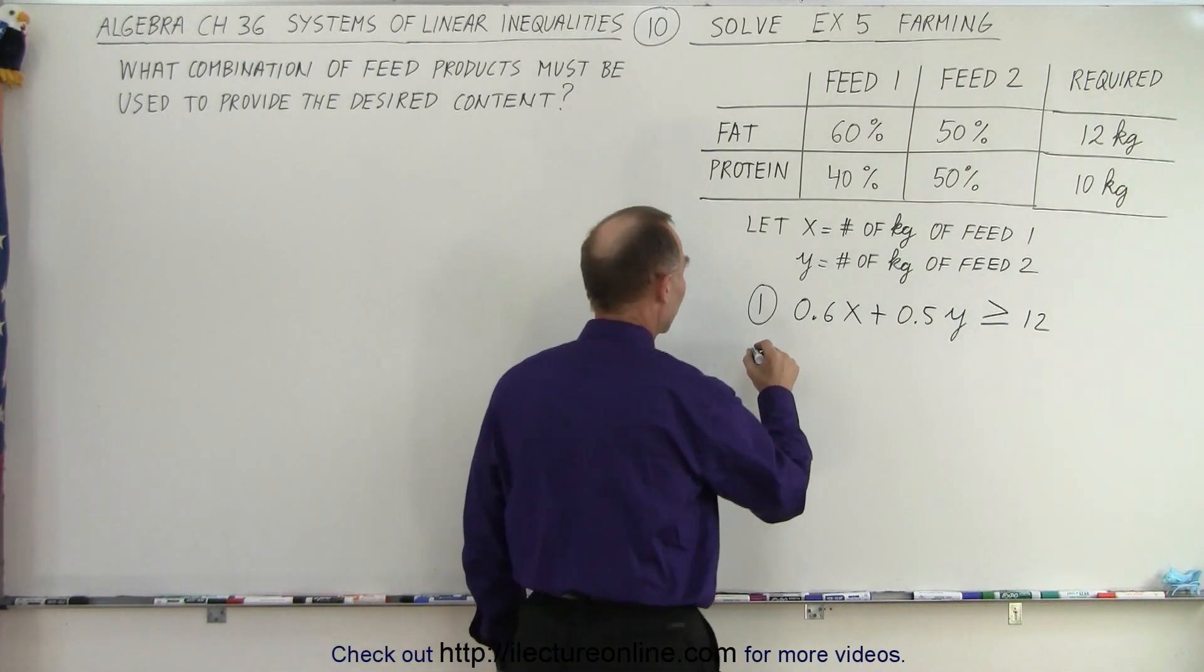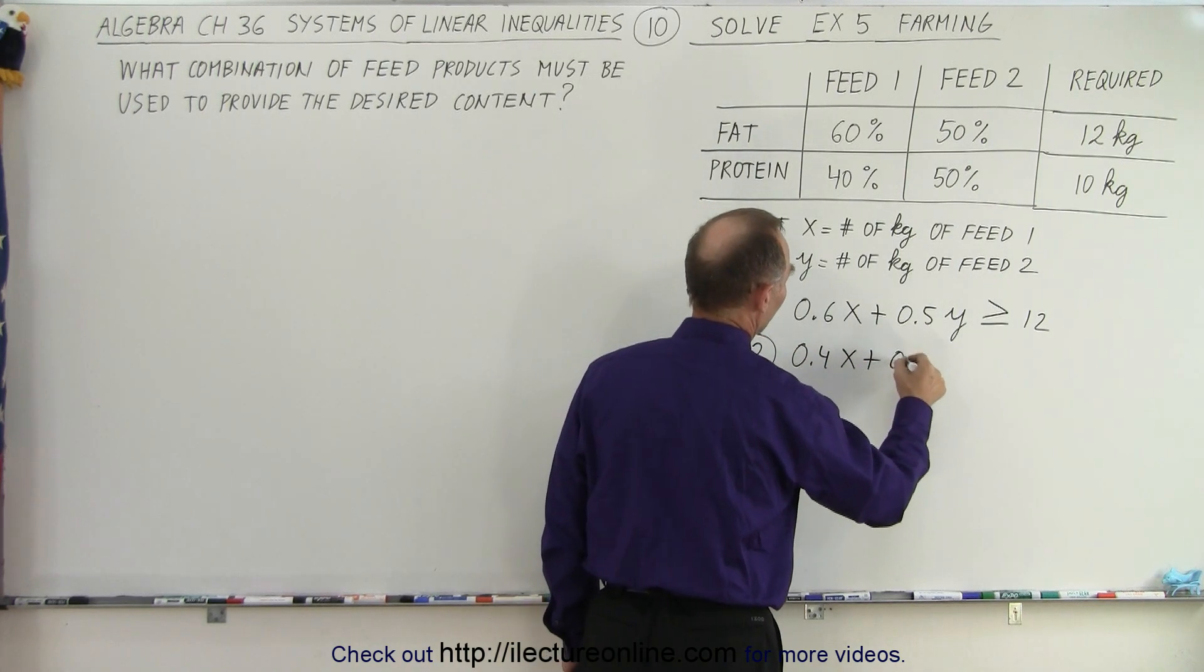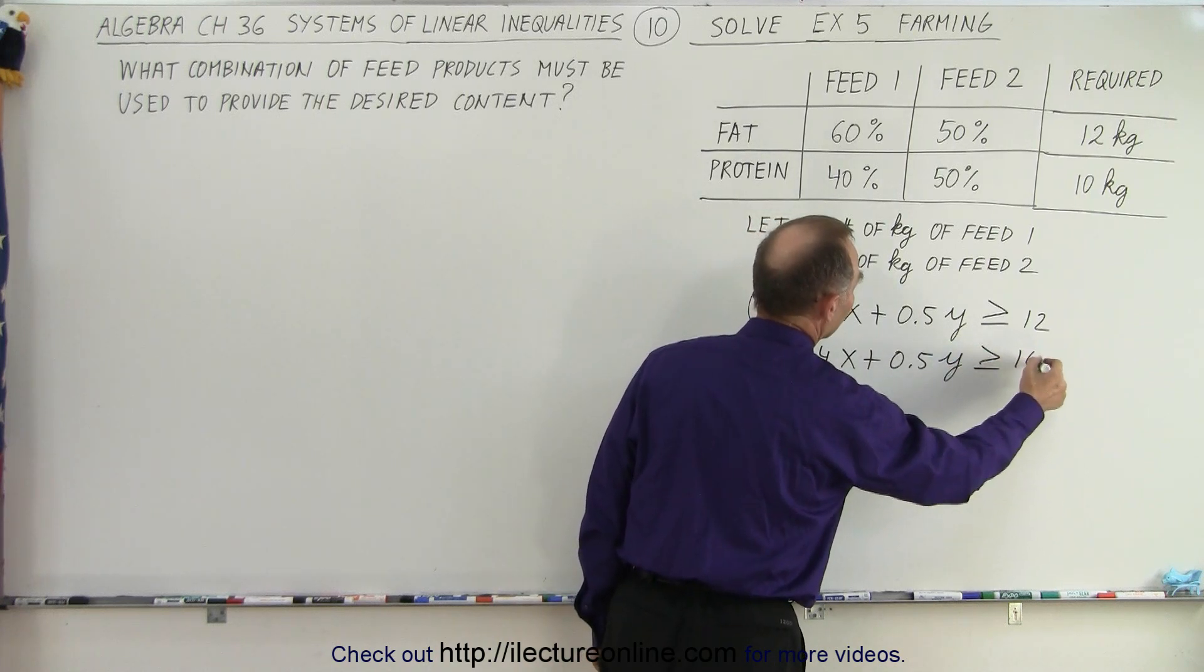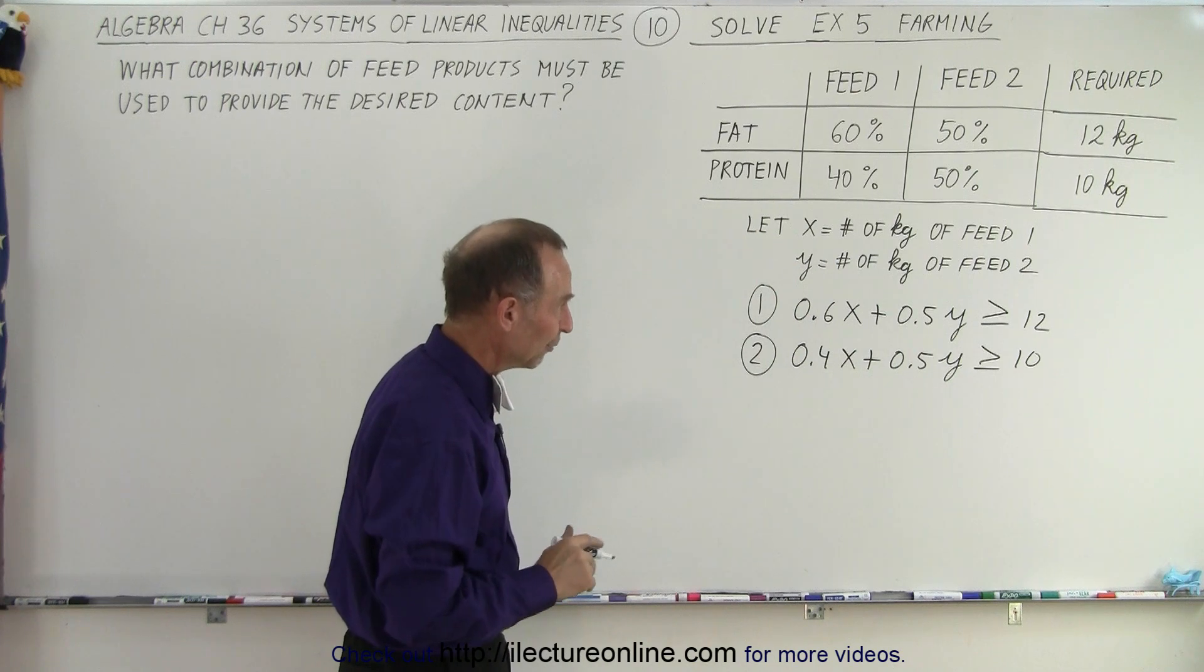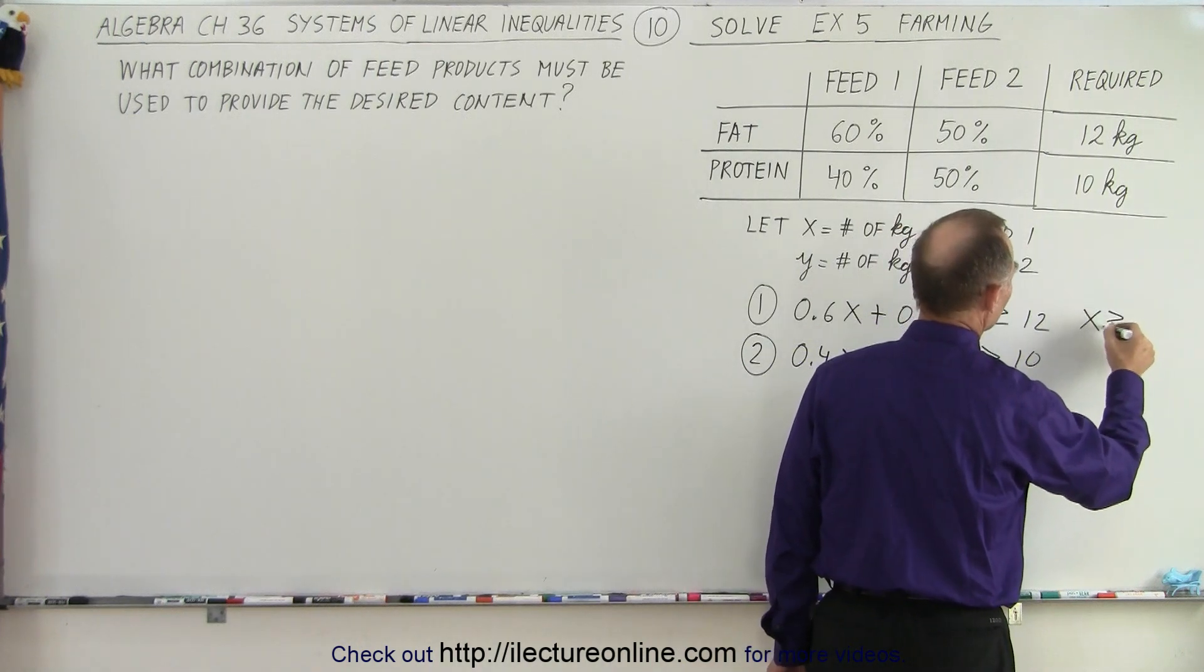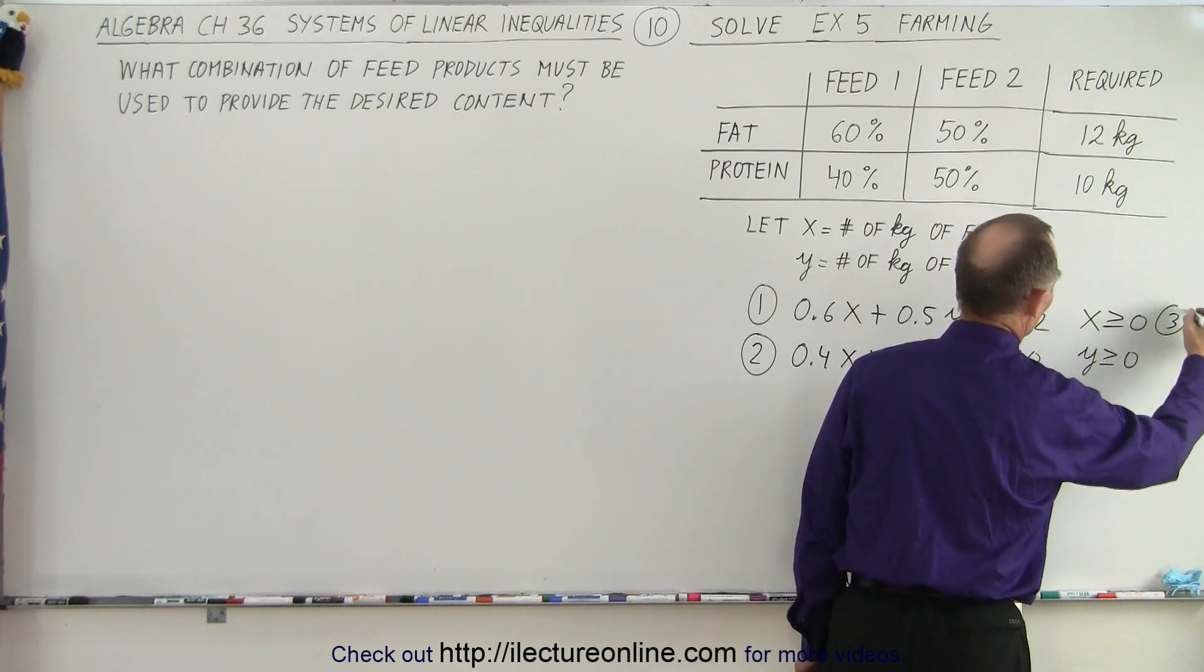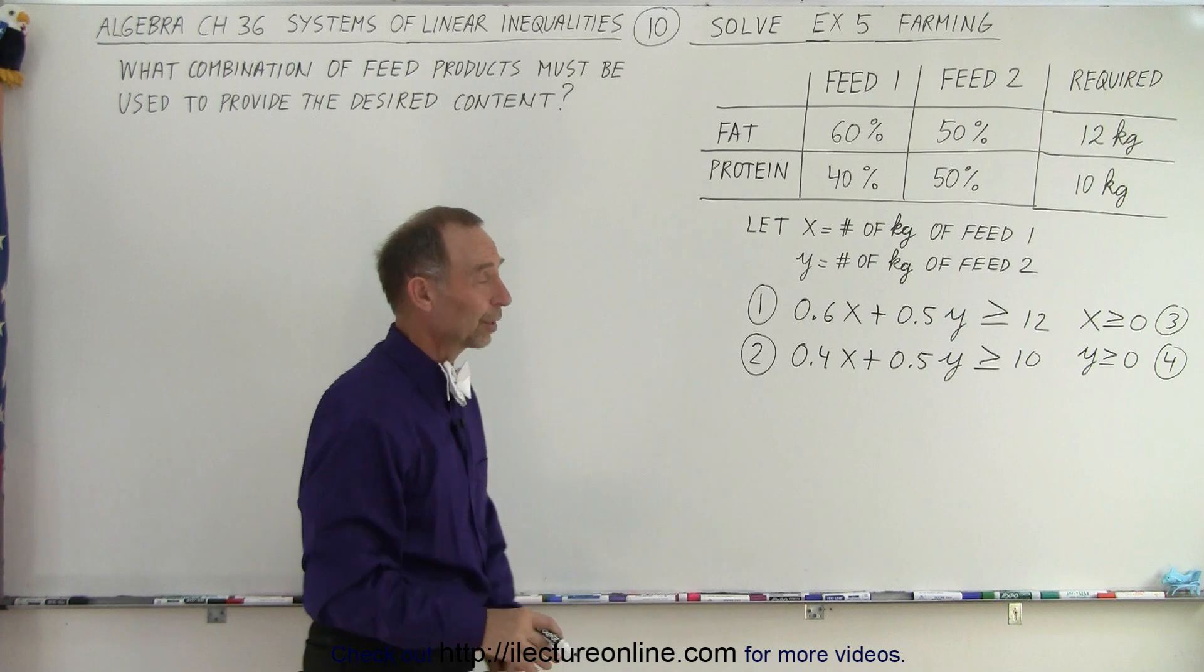And then we can do the same for the protein. So here we get 0.4 times x, plus 0.5 times y, must be greater than or equal to 10. So those are the two conditions we must adhere to. And of course, we can't have negative quantities. So we have a restriction that x must be greater than or equal to zero, and y must be greater than or equal to zero. So we can label this as inequality number three and inequality number four. That leaves us with four inequalities.